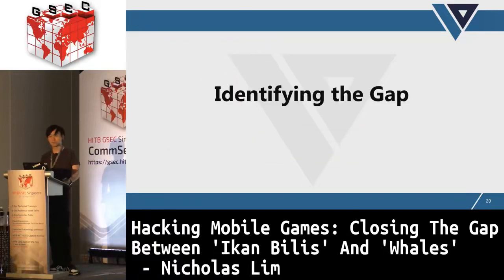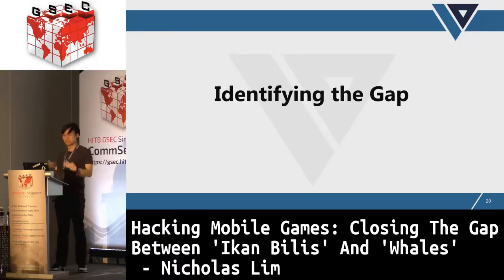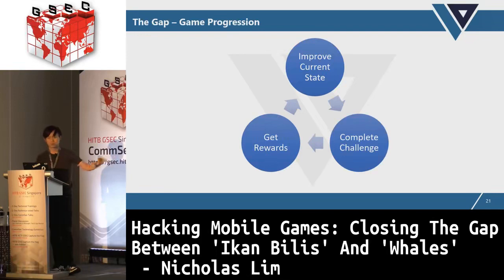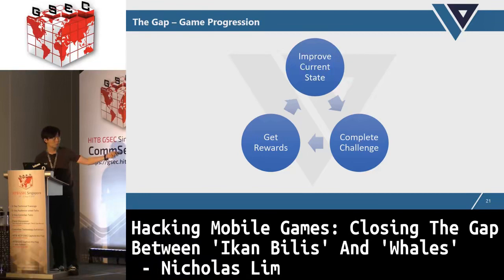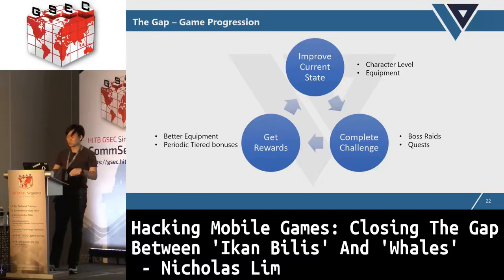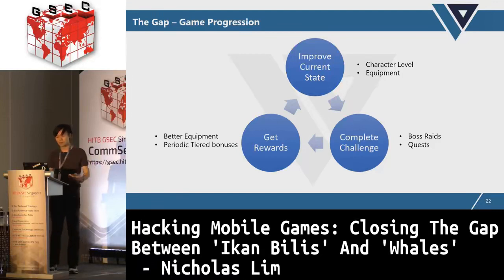Instead of just jumping in and hacking, we need a methodology. The target is to close the gap between the small fish and the whales. To do that, we need to identify the gap first. Game progression works like this: you improve your current state, complete challenges to get rewards, and repeat. Ways to gauge your current state include your character level and equipment. Once you reach a certain level, you can attempt boss raids or quests.